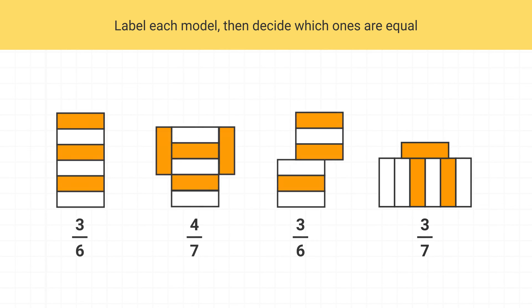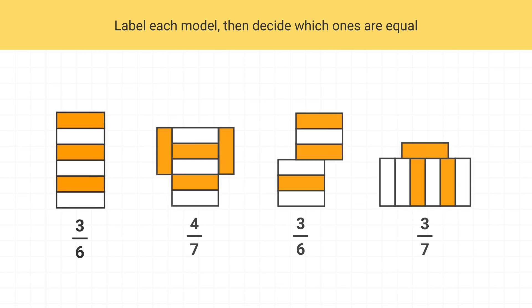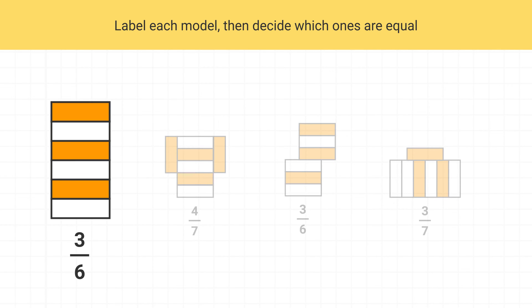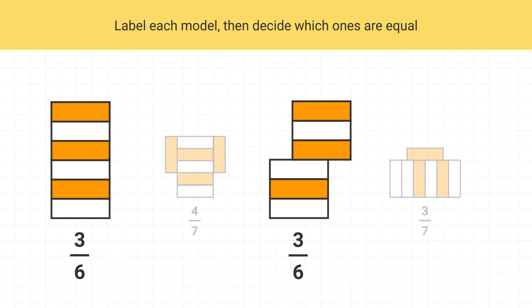Now that we've labeled these all, pick out which of them are equal. Well, you can see that this shape and this one both show three-sixths, so these two models are equal to each other.